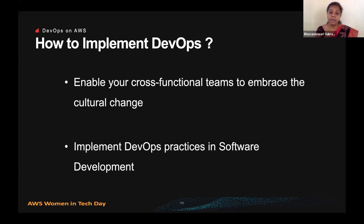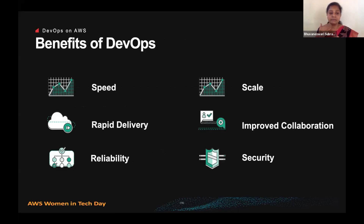Now we saw how to implement DevOps. As part of DevOps on AWS, the benefits we are going to get are: speed, rapid delivery, reliability, scale, improved collaboration, and security. Let's see how each one of these helps us.